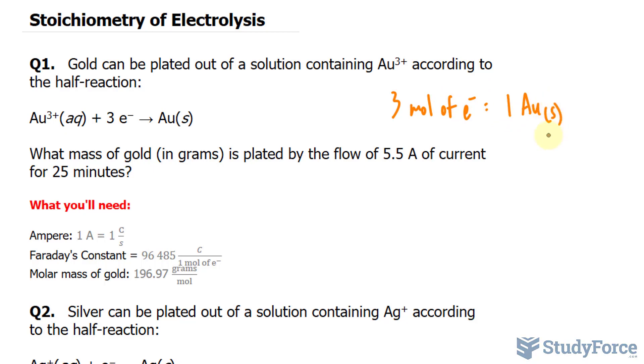As mentioned earlier, since current is a measure of charge per unit time, I'm going to take the amount of time, which is 25 minutes, convert it into seconds and multiply it to the current given.